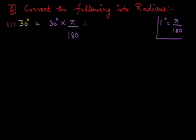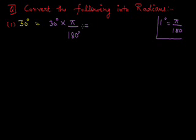Since 1 degree equals pi by 180, for 30 degrees we multiply by 30. So 30 degrees equals 30 into pi by 180. After simplification, the zeros cancel and 3 goes into 6 twice, giving us pi by 6.